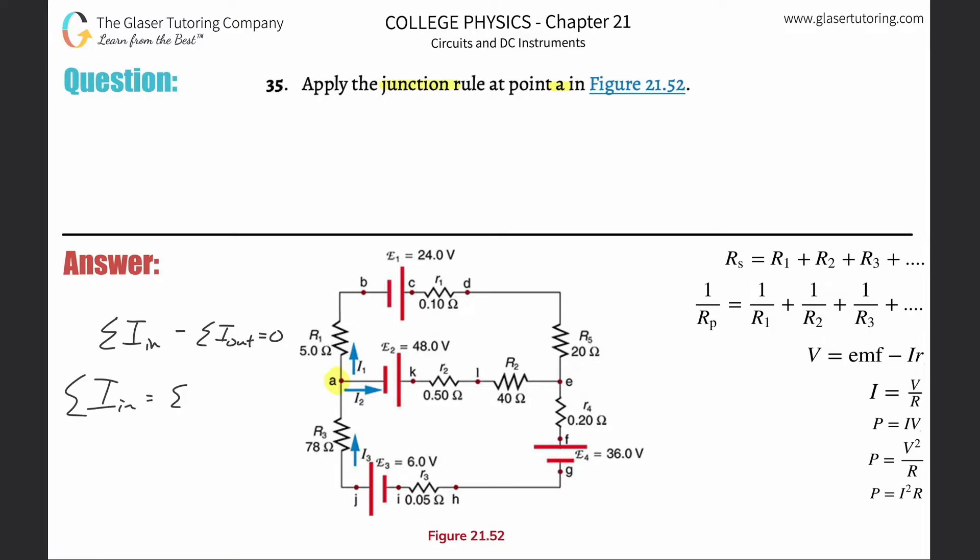If you take a look at the picture, it looks like they detailed i3 flowing into junction a, so I put i3 over here. Then coming out of that junction, they wrote i2 and i1.